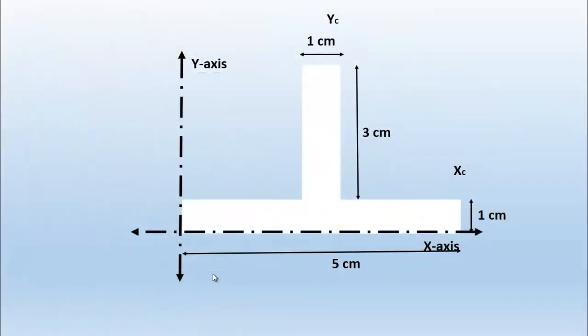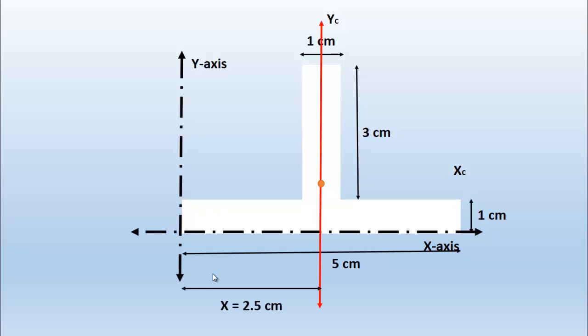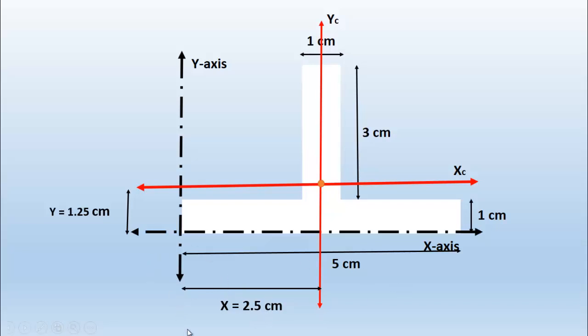We have located the centroid of the given inverted T-section. The horizontal centroidal distance is x̄ = 2.5 cm and the vertical centroidal distance is ȳ = 1.25 cm, as shown in the diagram. In the next video, I am going to locate the centroid of a C or channel section. Thank you very much for watching the video.